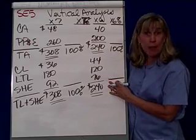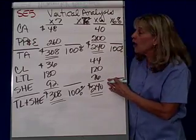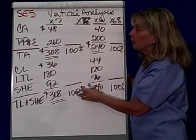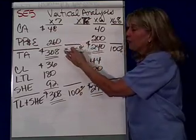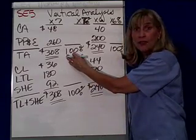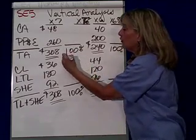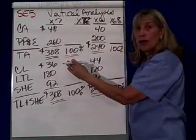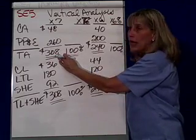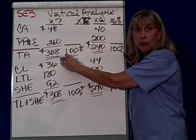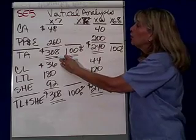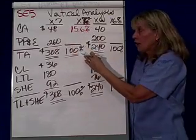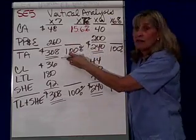When we do a balance sheet, such as in short exercise five, we take our balance sheet here. Notice CA is current assets; property, plant, and equipment equals total assets. Total assets are going to be equal to 100%. If current assets are expressed as a proportion of total assets — 48,000 divided by 308,000 — we find that it's 15.6%. So current assets are about 15% of total assets.